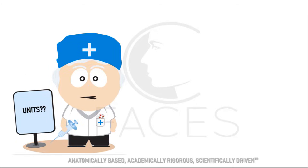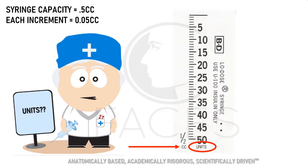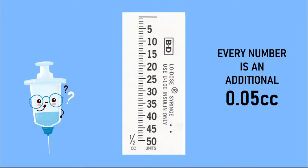So what if you have a syringe that says units on it? Well, don't panic. It also tells you the volume capacity as well. In this case, the syringe holds a half cc. Therefore, each numbered increment is valued at 0.05 cc's. As you can see here, every numbered line increases the liquid volume by 0.05 cc's.